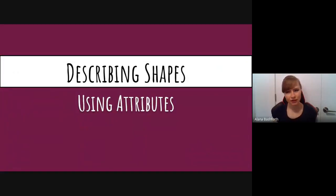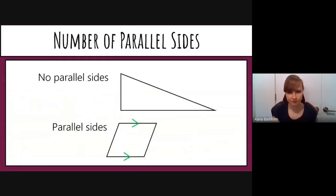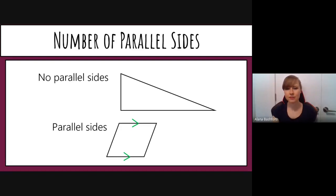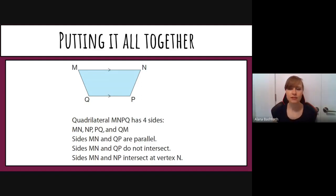Now let's compile everything together by describing shapes using attributes. For side lengths: a shape where all sides are equal is a square, and one where some sides are equal could be a rectangle. We can also describe how many parallel sides a shape has — for example, one shape has no parallel sides, and another has one set of parallel sides.